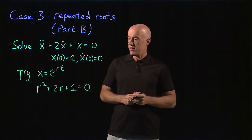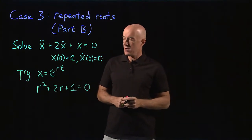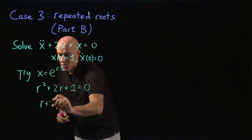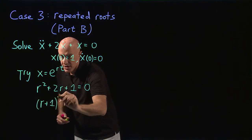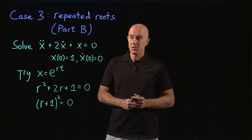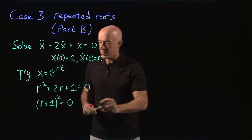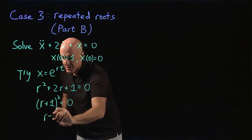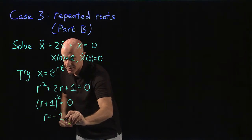This equation is factorable. So we have r plus 1 squared equals 0, a perfect square. And then we have one root of the characteristic equation, so r equals minus 1.